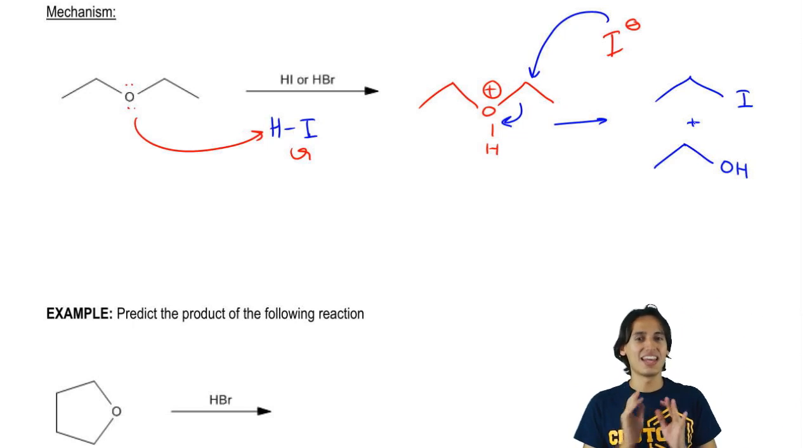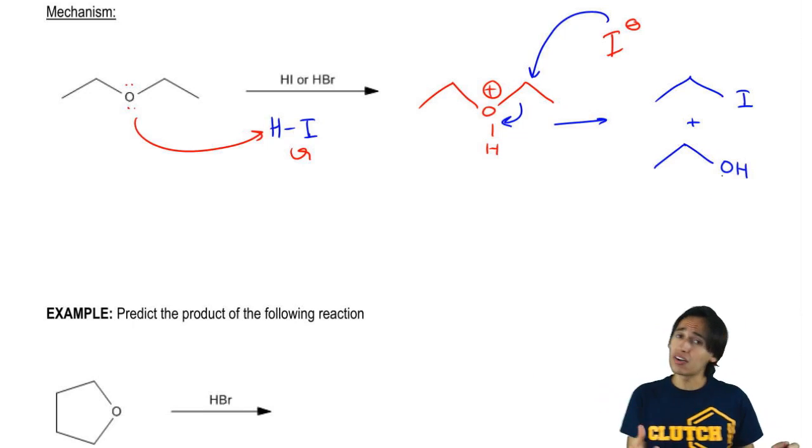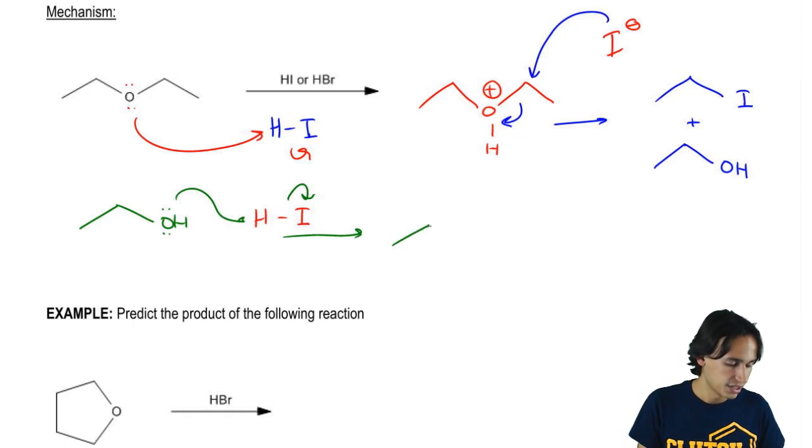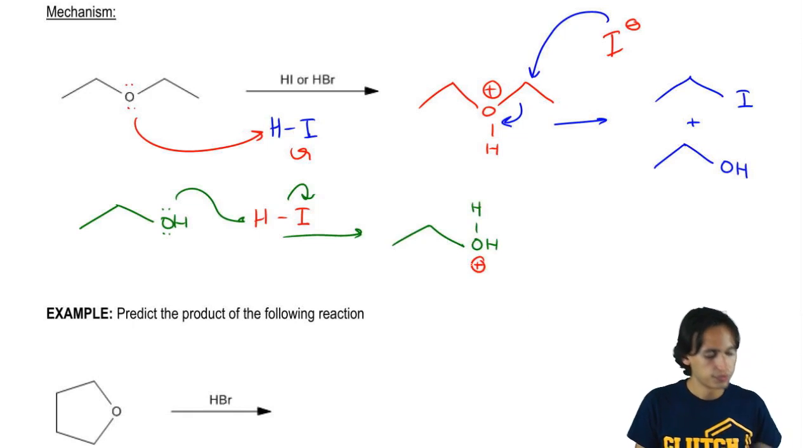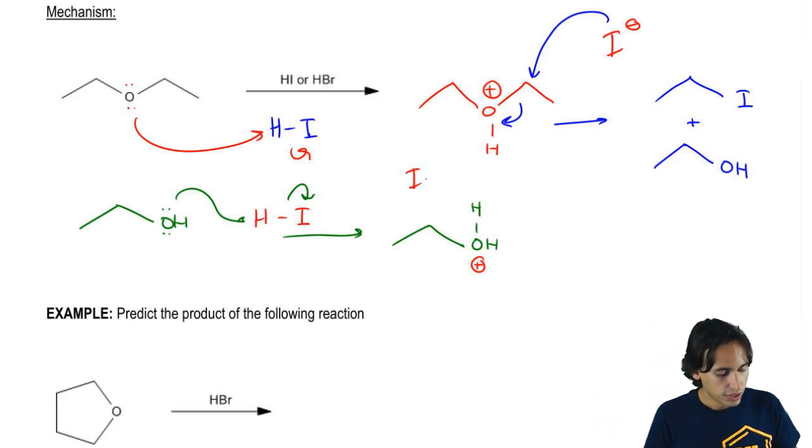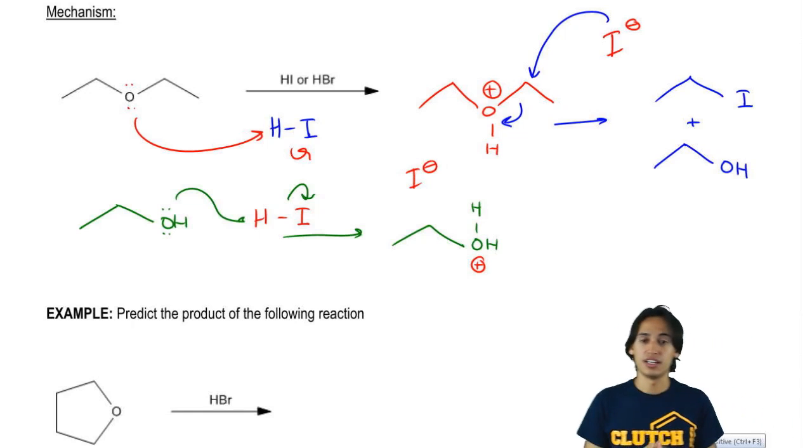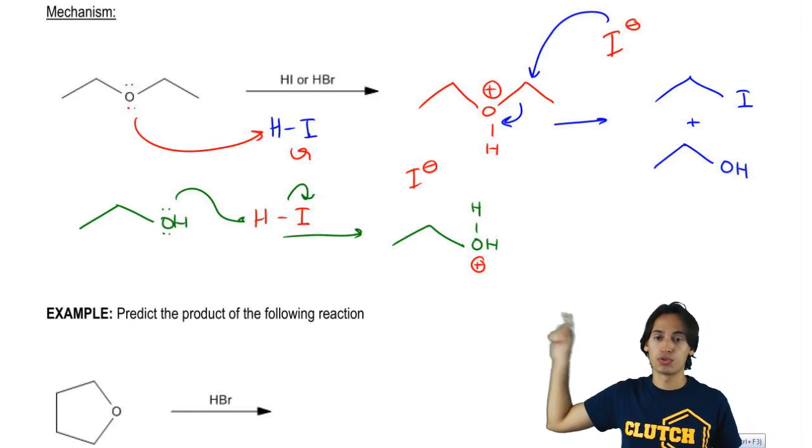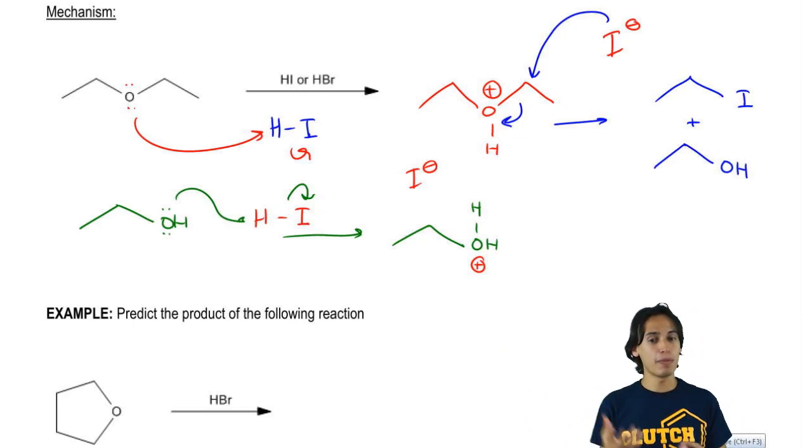But it doesn't end there because now that I have the alkyl iodide, that's done. The alkyl halide is done reacting. But the alcohol can actually react again because what I can do now is I can take my alcohol and I can protonate it with another equivalent of HI. And what that's going to give me is OHH positive and then I have an I negative. Now, guys, if you have already studied the conversion of alcohols to good leaving groups, then this is actually that same exact reaction. All we're doing is we're converting alcohol to a good leaving group using HI. And that mechanism should be what? Do you guys know?